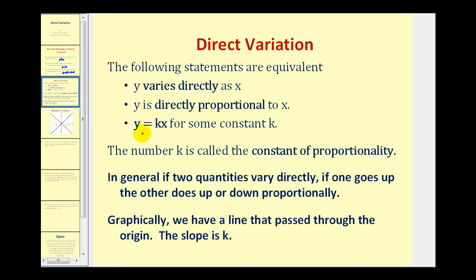So because of this equation here, in general, if two quantities vary directly, if one goes up, let's say X, then the other will go up or down proportionally, based upon the value of K. And graphically, this equation should remind us of Y equals MX, where the Y intercept would be zero. We have a line passing through the origin with a slope of K. Let's take a look at this graphically.